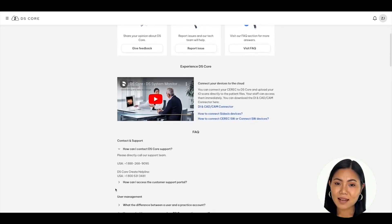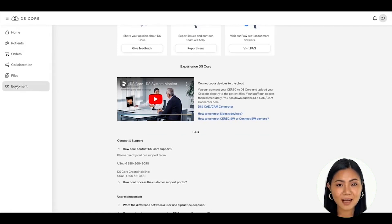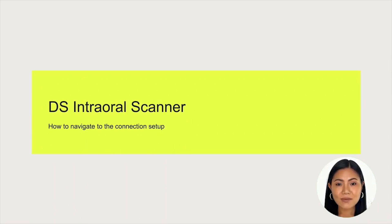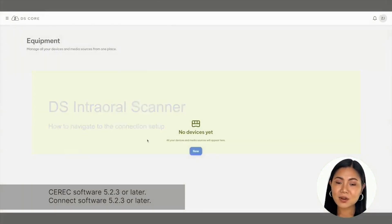I'm going to navigate back to the equipment list by opening the main menu and clicking on Equipment. Let's get started with how to connect an intraoral scanner. Open a web browser on your Dentsply Sirona intraoral scanner, such as a PrimeScan, running CEREC Software 5.2.3 and/or Connect Software 5.2.3, and log into DSCore.